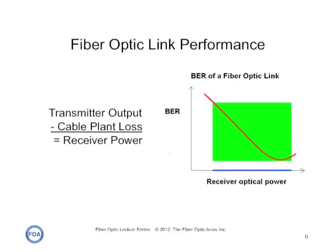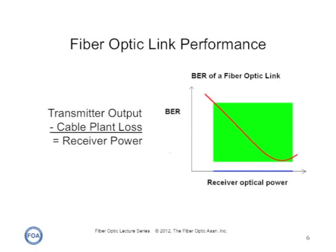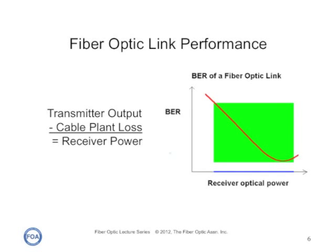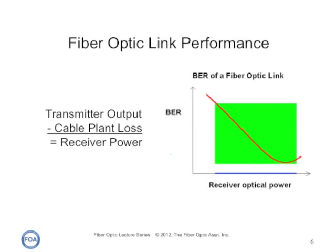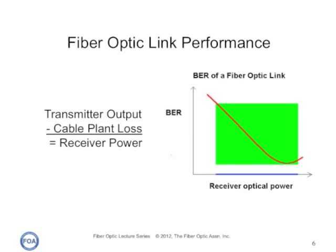The performance of a fiber optic link is defined by this graph. The vertical scale is bit error rate, which is the inverse of signal-to-noise. The horizontal scale is receiver optical power, and the red line shows that as the receiver optical power gets higher, the bit error rate goes down — that is, the signal-to-noise improves and the quality of the signal improves — and that will continue until the receiver optical power gets so high that it starts saturating the receiver, and that red line starts turning up again very quickly to a high bit error rate.